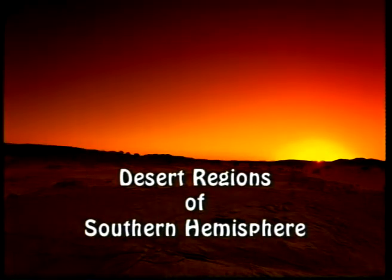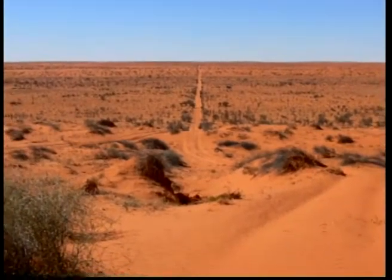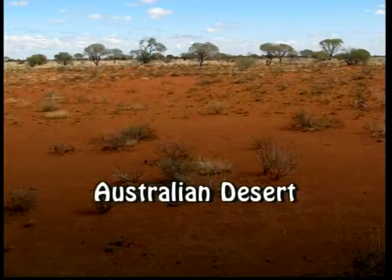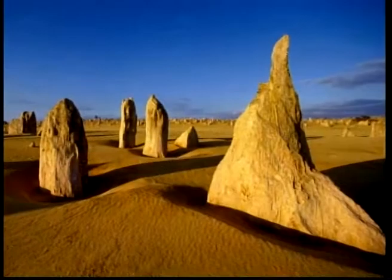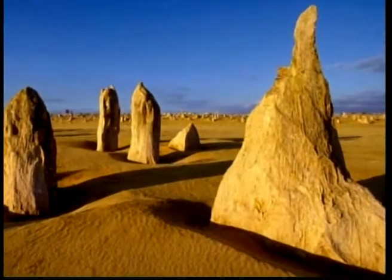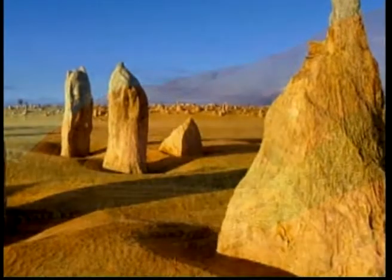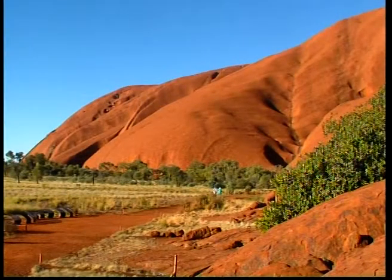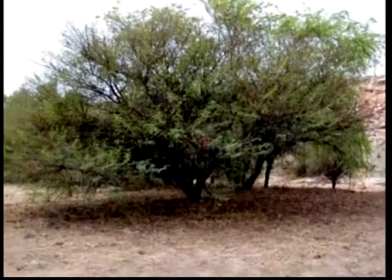Desert regions of the Southern Hemisphere: Some of the main deserts of the Southern Hemisphere are the Australian Desert. About half of the Australian continent is arid, having desert conditions. Some deserts are sandy and some are stony. The most common plant is the grass known as spinifex, and small trees and shrubs like acacia.